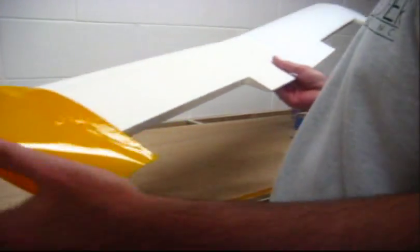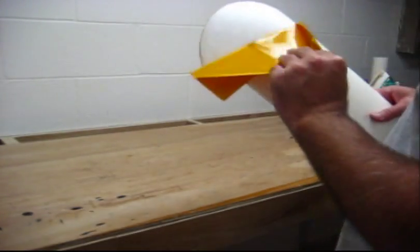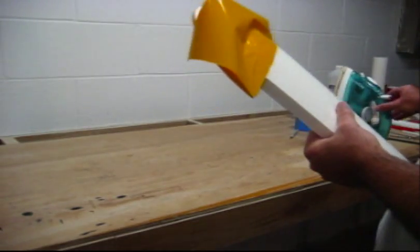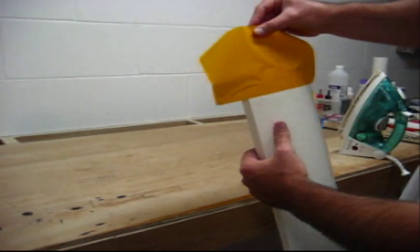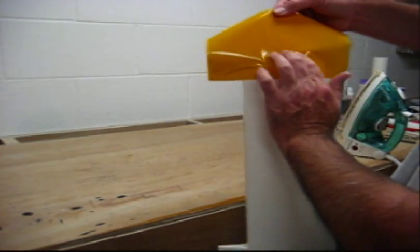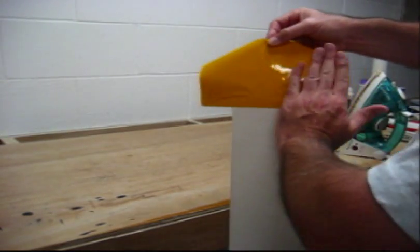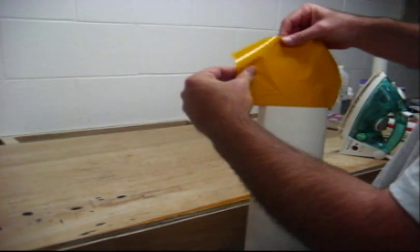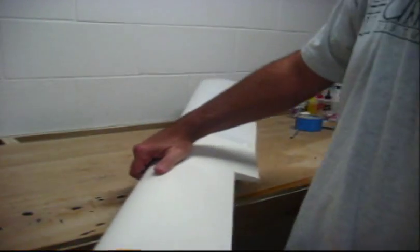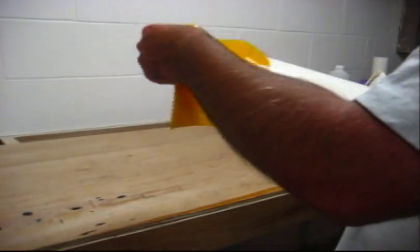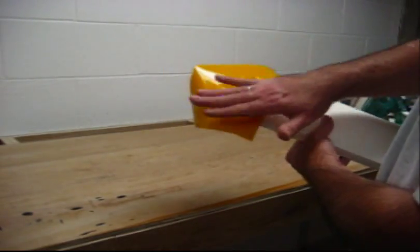I'm now to the wing tip. I went ahead and got my yellow piece on there. And I cranked the setting of the iron up to the next level. What we're going to start to do now is we're going to start in the middle and we're going to work our way down the wing tip this way. Then we'll slowly start pulling this material and stretching it across the wing tip. Definitely take your time here. You can get it so it's wrinkle free.